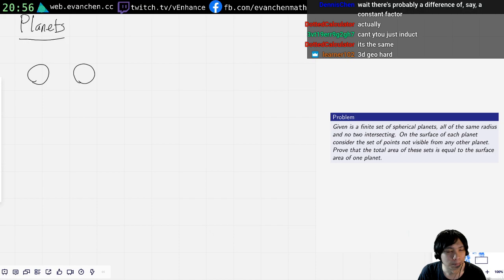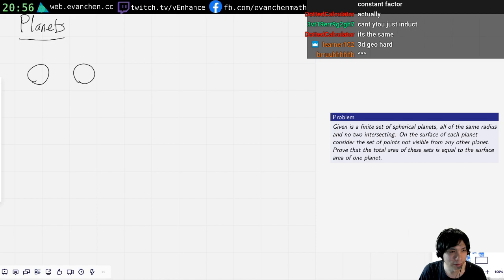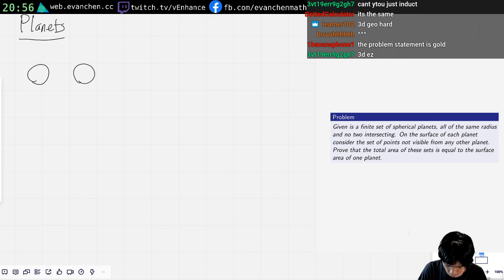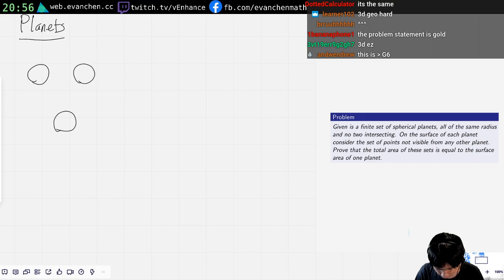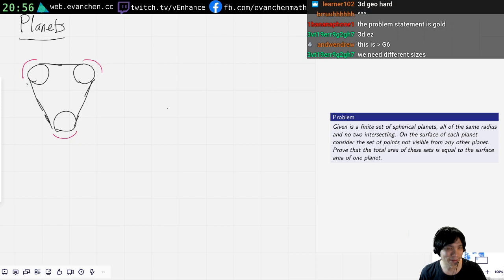So on the surface of each planet, consider the set of points not visible from any other planet. Okay, what if I just make an equilateral triangle? What does that set look like? All right, so for N equals 3...